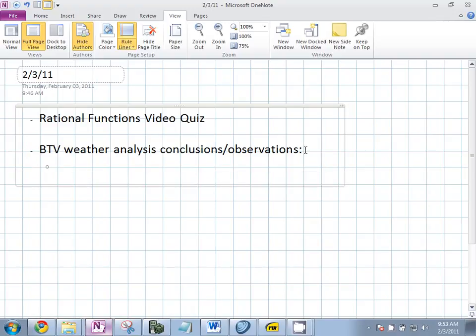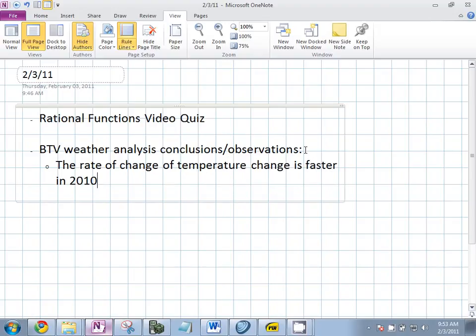Justin. First, I draw a graph. I just want to know what your conclusion or observation was. Because of the global warming, the speed of increasing temperature and decreasing temperature in 2010 is much faster than 1892. The rate of change of temperature is faster in 2010 than it was in 1892.